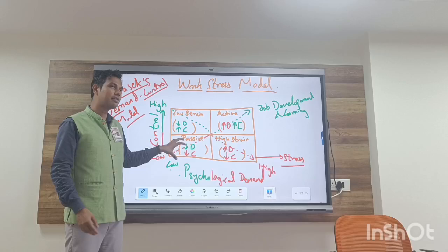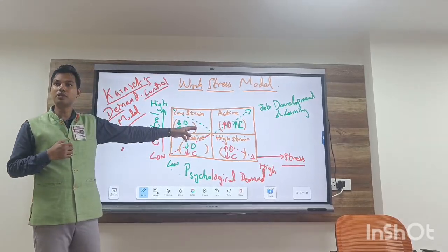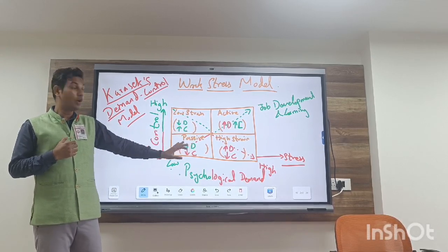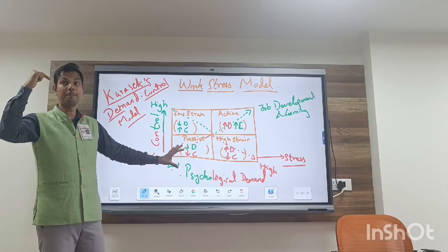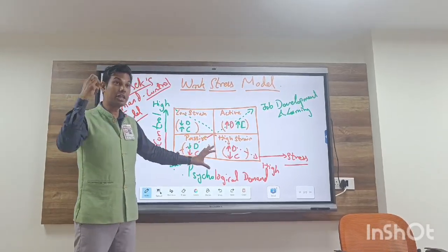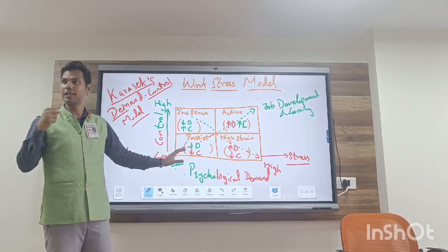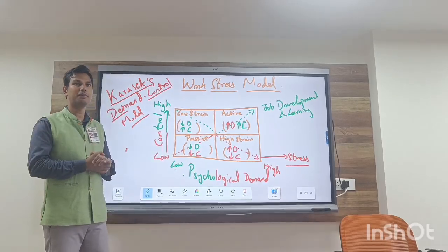Now passive task means your involvement is very less. Active task - the demand of the situation is very high. Which demand? Psychological demand. You need to have knowledge, you need to have appropriate experience. Okay, that is psychological demand. The demand of the situation is very high, psychological demand.